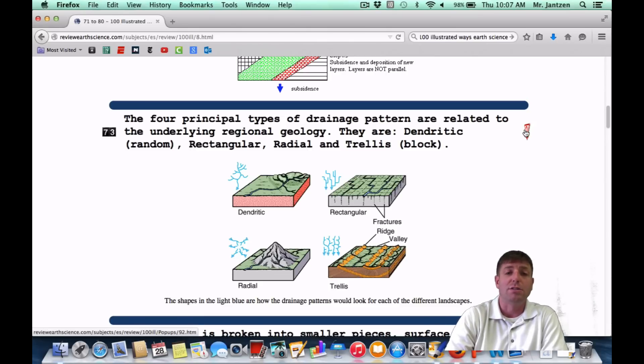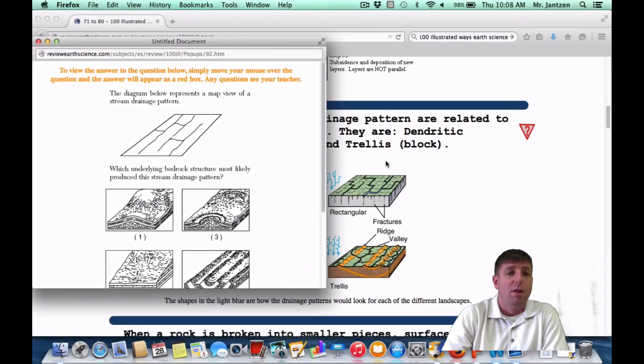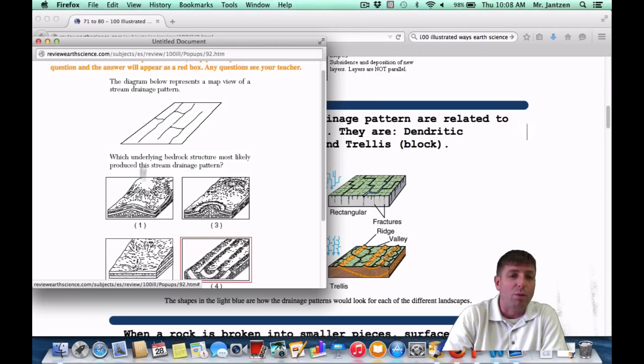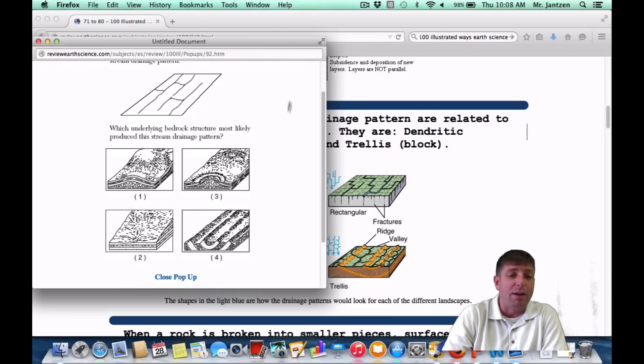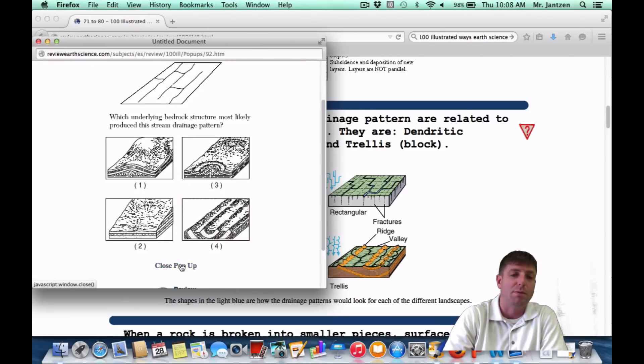So let's look at it as a Regents question. The diagram below represents a map view of a stream drainage pattern. Which underlying bedrock structure most likely produced this stream drainage pattern? Your bird's eye view, you have it kind of aligned here, here, and here. Which one of these is it going to fit in? Where is the water going to fit in? It's going to fit in this pattern here because that's where the water would kind of fit in between. So it's going to be choice four.